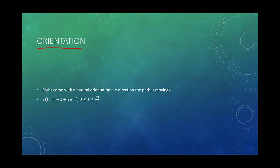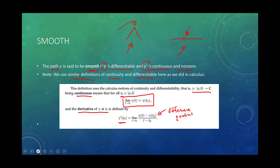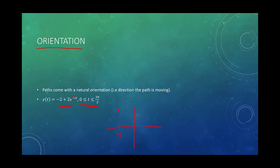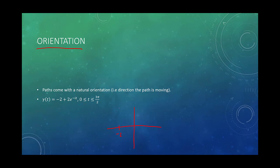The last topic is orientation. Paths come with a natural orientation — the direction the path is moving, how it's flowing, like a river. Going back to a circle example: consider γ(t) = −2 + 2e^(−it) for t from 0 to 3π/2. Notice the negative sign in the exponent — negative angles rotate clockwise.